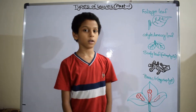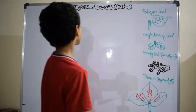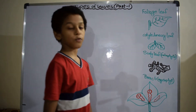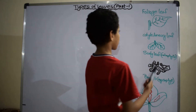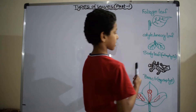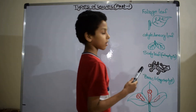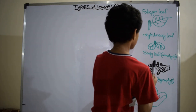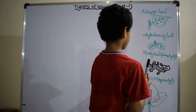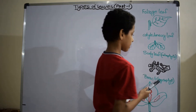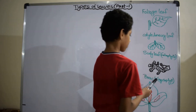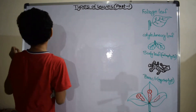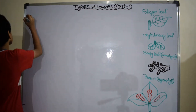Hi, I am Sahar Prabhakar. Now I am telling types of leaves. First one is foliose leaves. Second one is cotyledonary leaves. Third one is scaly leaves. And fourth one is bract. Let's start.